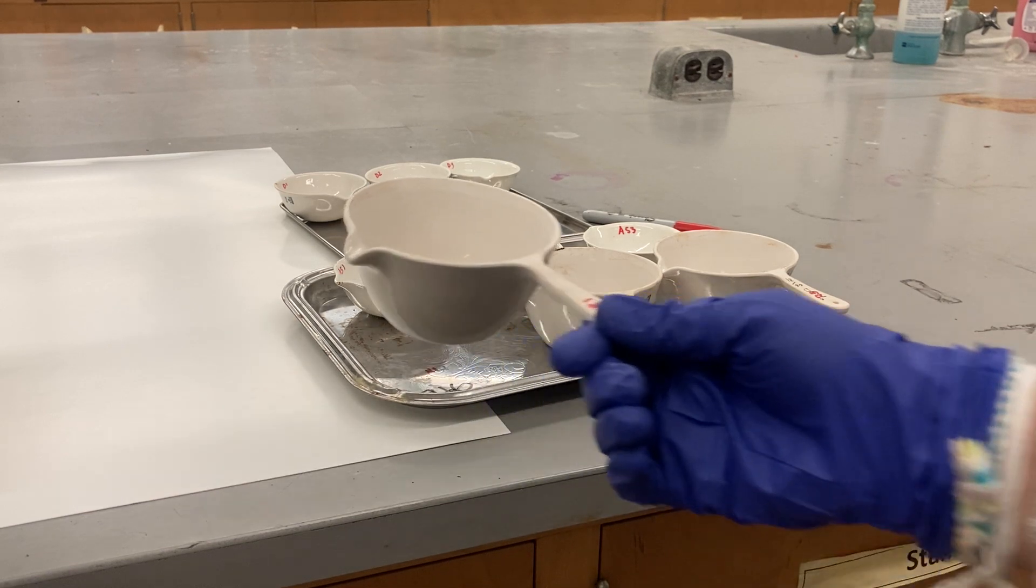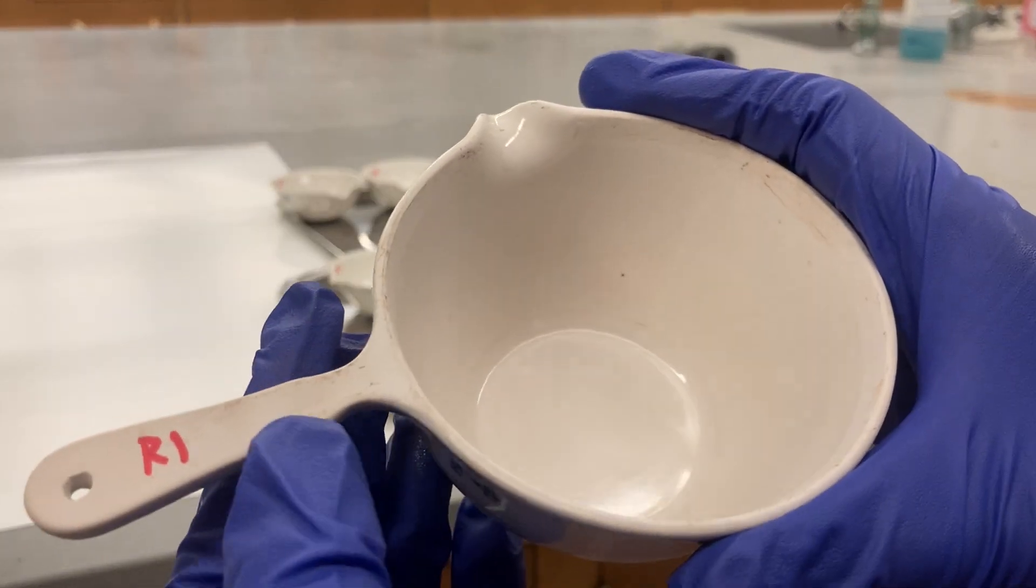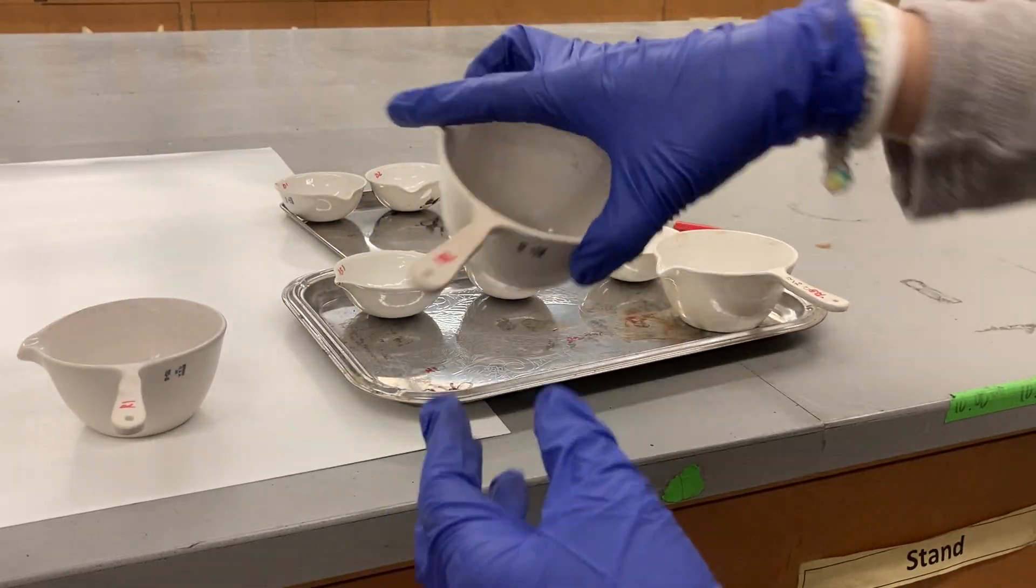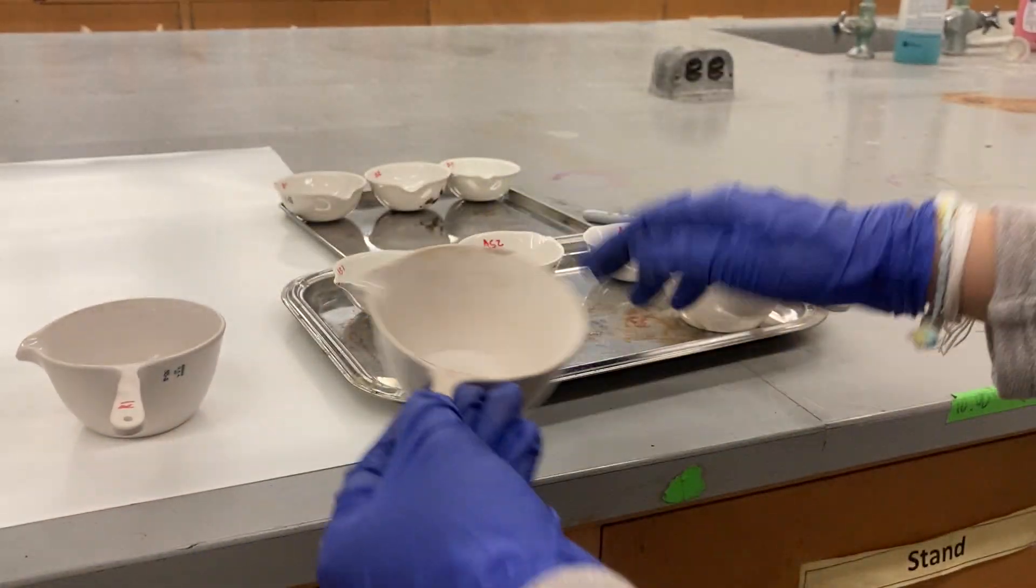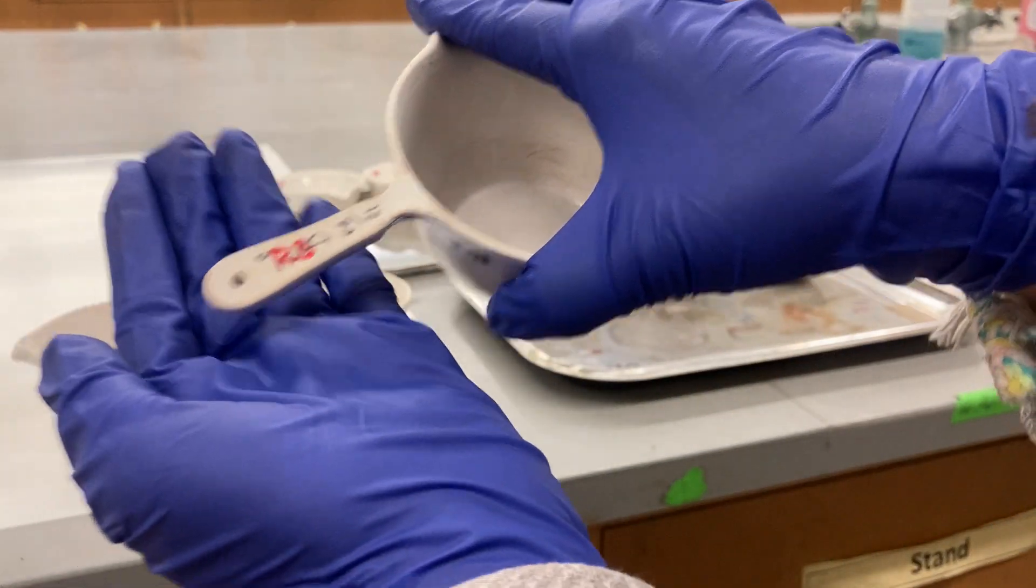Step number one: make sure everything is ready. For the runoff sample, I call it R1, the second replicate is R2, and the third one R3.